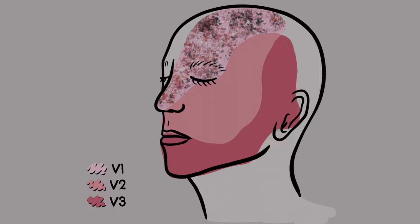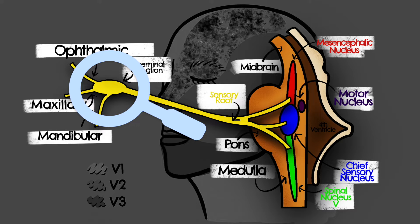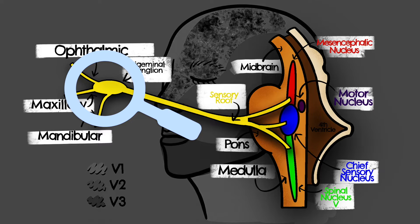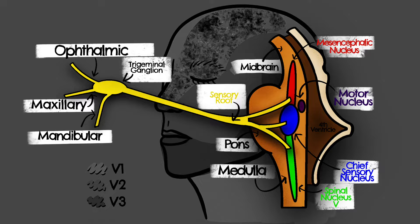This typically occurs from within the trigeminal ganglion, which is the large crescent-shaped sensory ganglion of the trigeminal nerve, located in the trigeminal cave and surrounded by cerebrospinal fluid. The trigeminal ganglion contains the cell bodies of the sensory root of the trigeminal nerve.